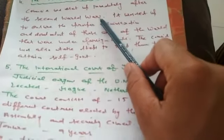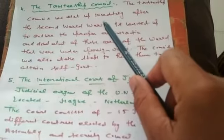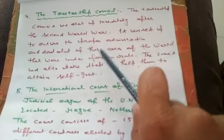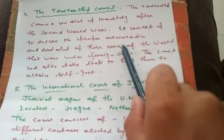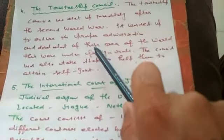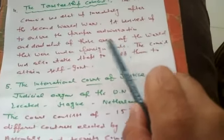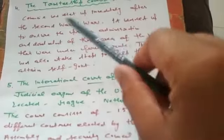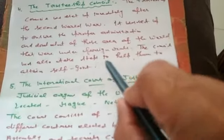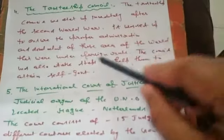Now we discuss the fourth organ of the UN — the Trusteeship Council. The Trusteeship Council was established immediately after the Second World War. It was set up to ensure proper administration and development of areas of the world that were under foreign rule. The council also took steps to help those countries establish self-government wherever foreign rule existed.